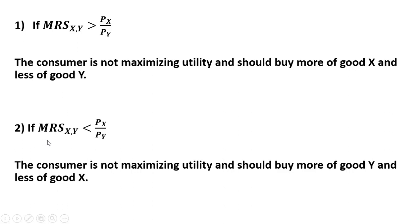On the other hand, if the marginal rate of substitution of good x for good y is less than the price ratio of good x to good y, the consumer is not maximizing utility, but in this case should buy more units of good y and fewer units of good x.